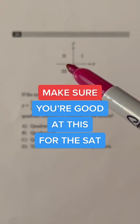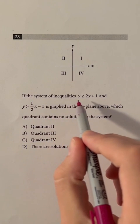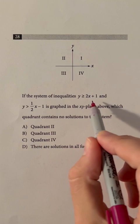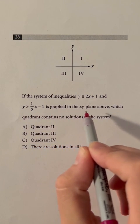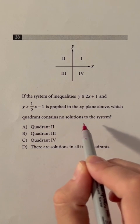Make sure you're good at this for the SAT. If the system of inequalities y is greater than or equal to 2x plus 1 and y is greater than 1 half x minus 1 is graphed in the xy plane above, which quadrant contains no solutions to the system?